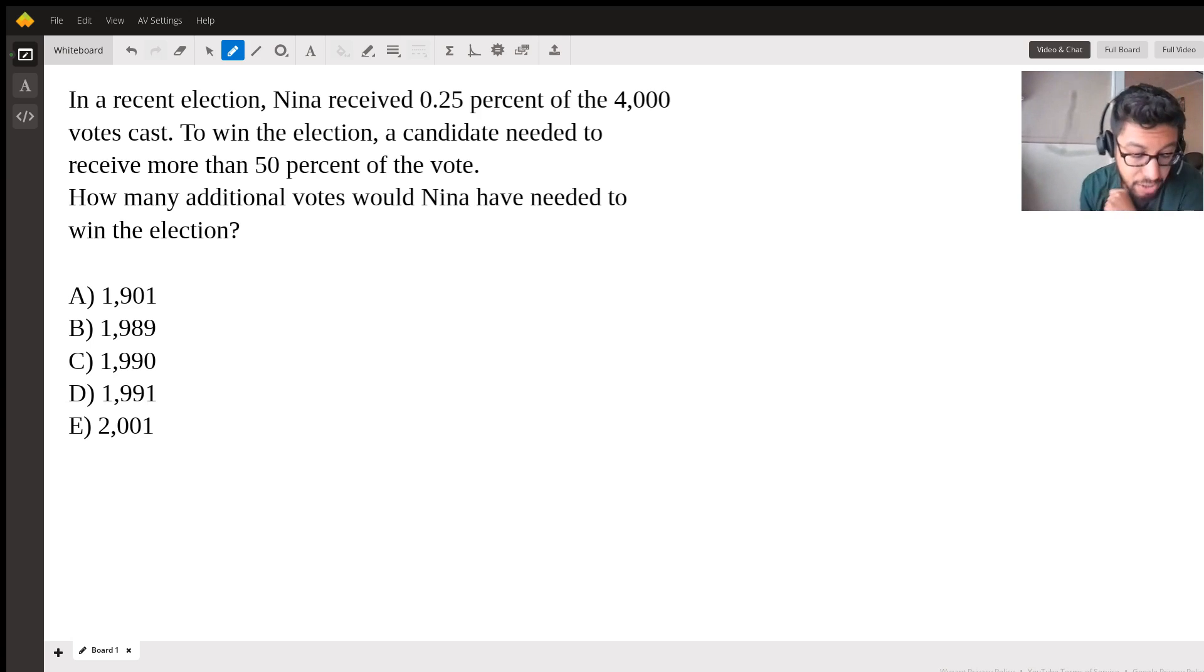the question is asking us, how many additional votes will Nina have needed in order to win the election? And the question states that in order to win, a candidate needs to receive more than 50% of the votes. So how can we interpret that properly?